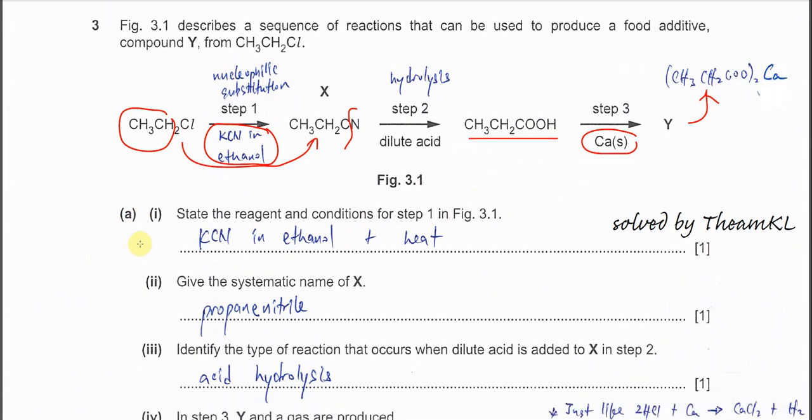Part (a)(i): State the reagent and conditions for step 1. Very easy. KCN in ethanol must with heat. Because the nitrile that used is actually a relatively weak nucleophile. It takes time or it needs energy to substitute this chlorine. So must put heat there.